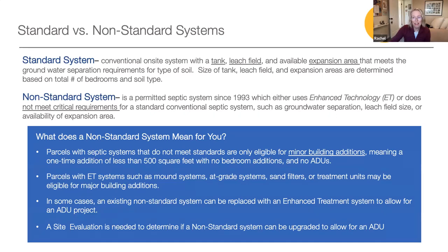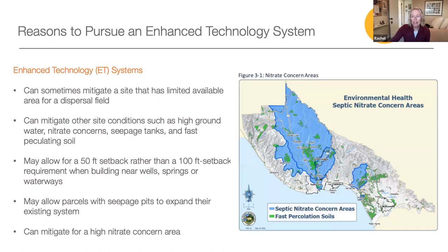In all cases, a site evaluation is needed to determine if the system can be upgraded to allow for a new unit. Enhanced technology systems — also called advanced or enhanced treatment systems — can sometimes mitigate a site that has limited available area for a leach field. They can also mitigate other site conditions such as high groundwater, nitrate concerns, seepage tanks, and fast-percolating soil. They may allow for a 50-foot setback rather than a 100-foot setback when building near wells, springs, and waterways. In all cases, enhanced treatment provides for an expansion of the system to allow for the development of an ADU.